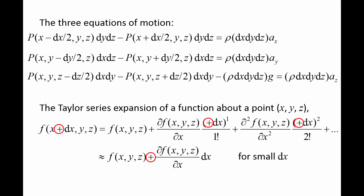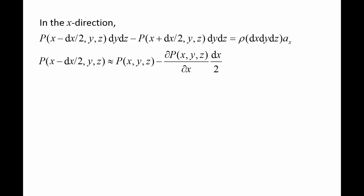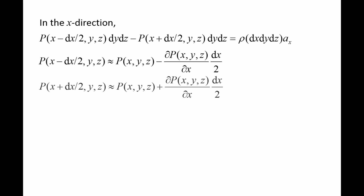Note that if the positive sign in front of dx on the left side of the equation were changed to a negative sign, the positive sign circled in red on the right side of the equation would change to negative signs as well. For the equation of motion in the x-direction, the pressure at x minus half dx is approximately the pressure at x, y, z minus partial p partial x at point x, y, z times dx divided by 2. The pressure at x plus half dx is approximately the pressure at x, y, z plus partial p partial x at point x, y, z times dx divided by 2.